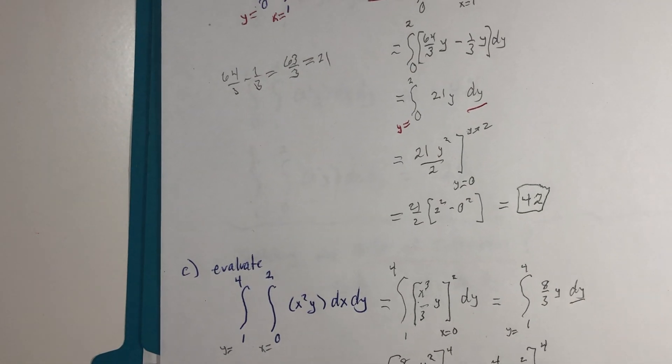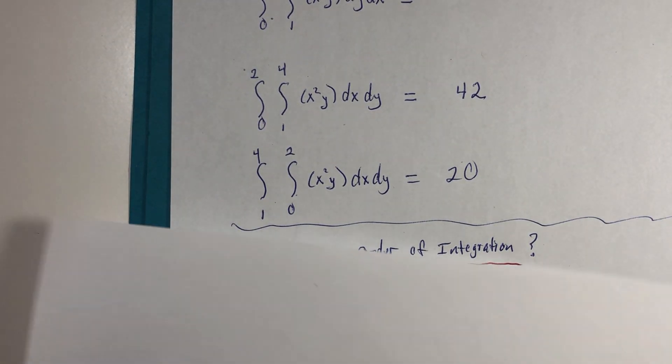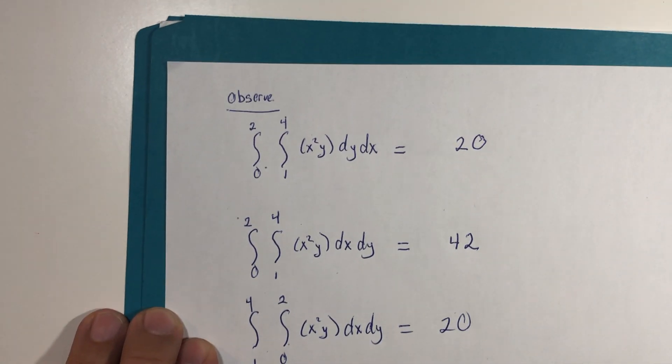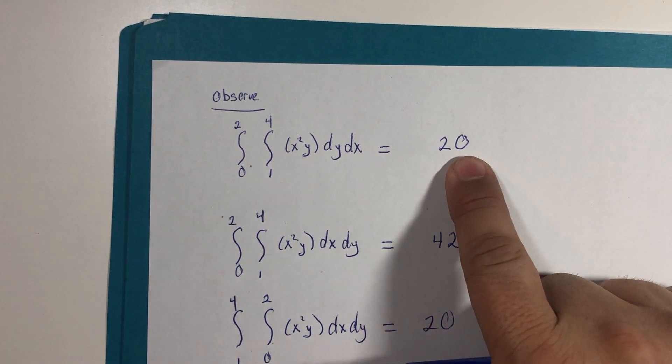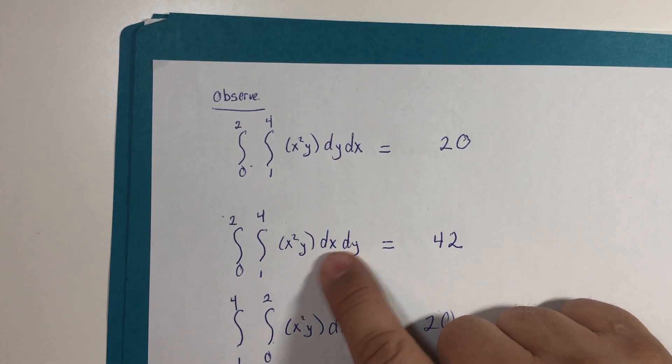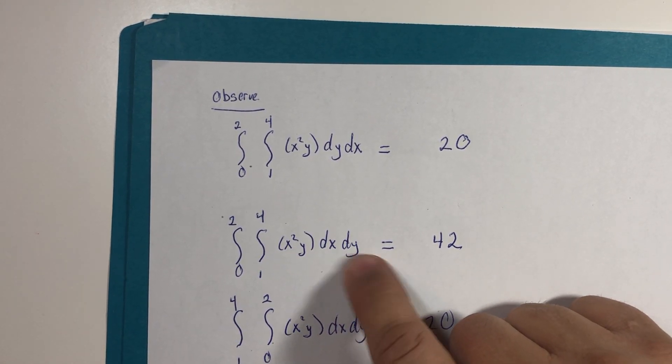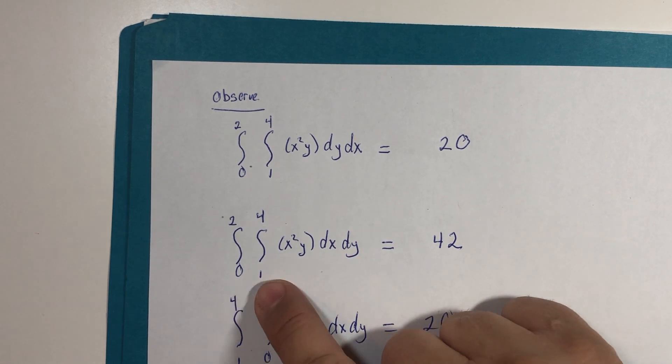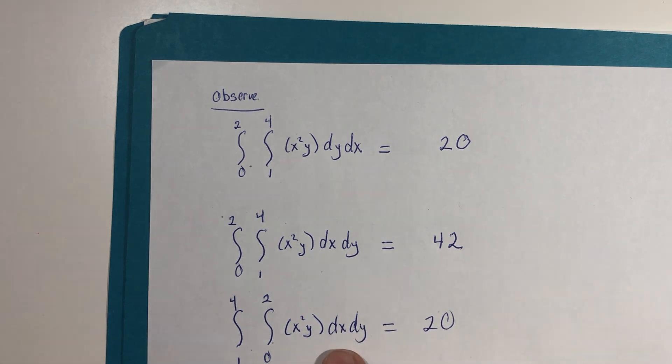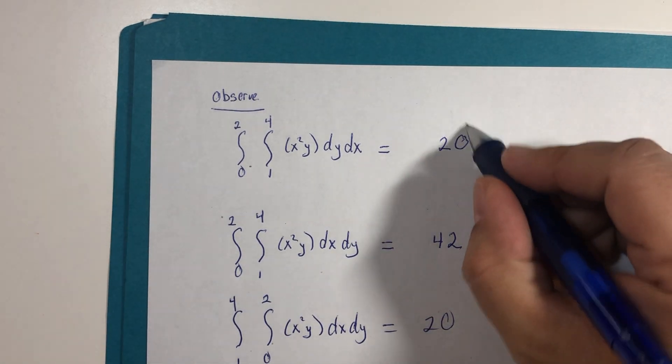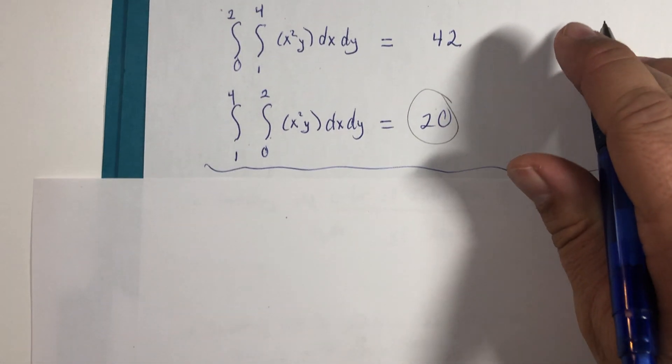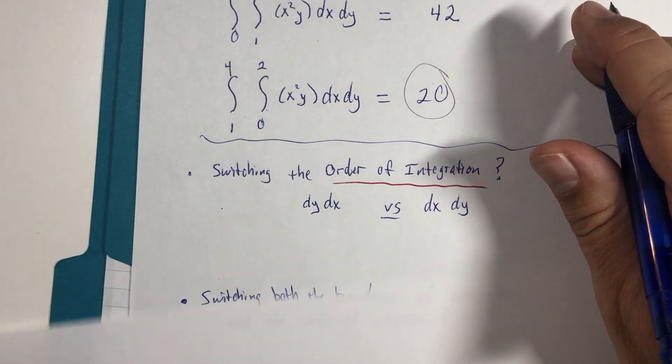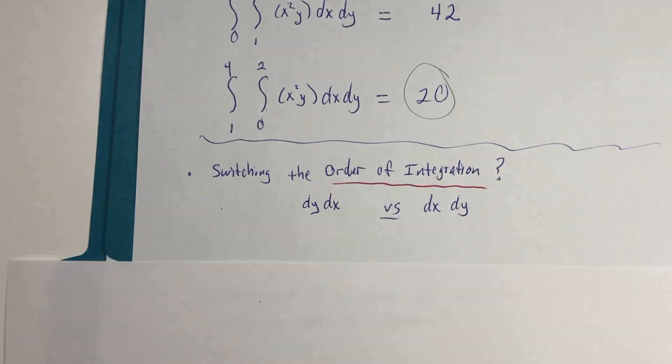The first problem, when integrated, gave us 20. When we switched only the order of integration, the order of integration, but not the limits, we got a different value. When both the order of integration and the limits were switched, we got the same value as the initial problem. And so let me just point out two conclusions we can, one we can draw and one you'll have to find out later. All right, let's get the hand out of the way.